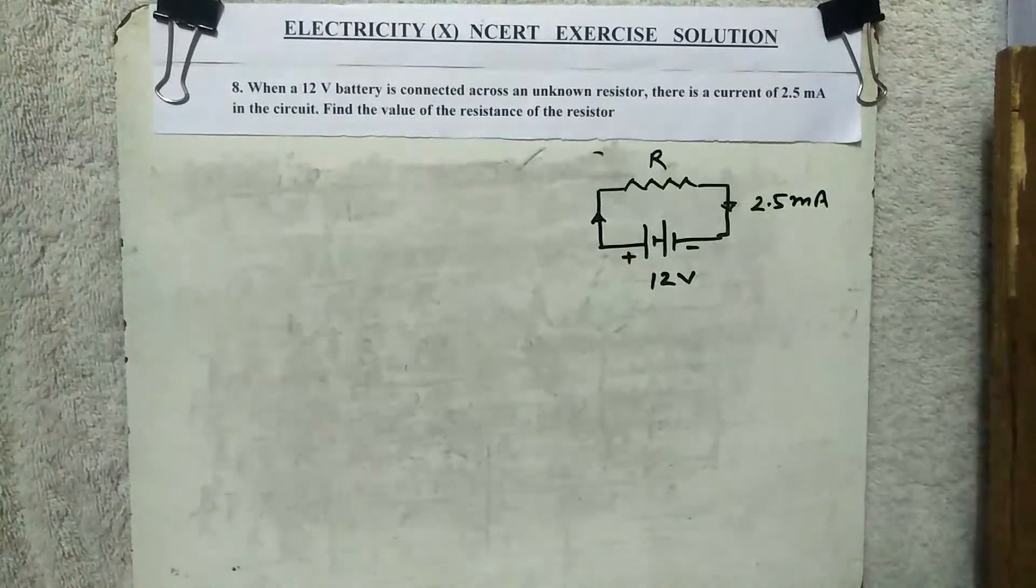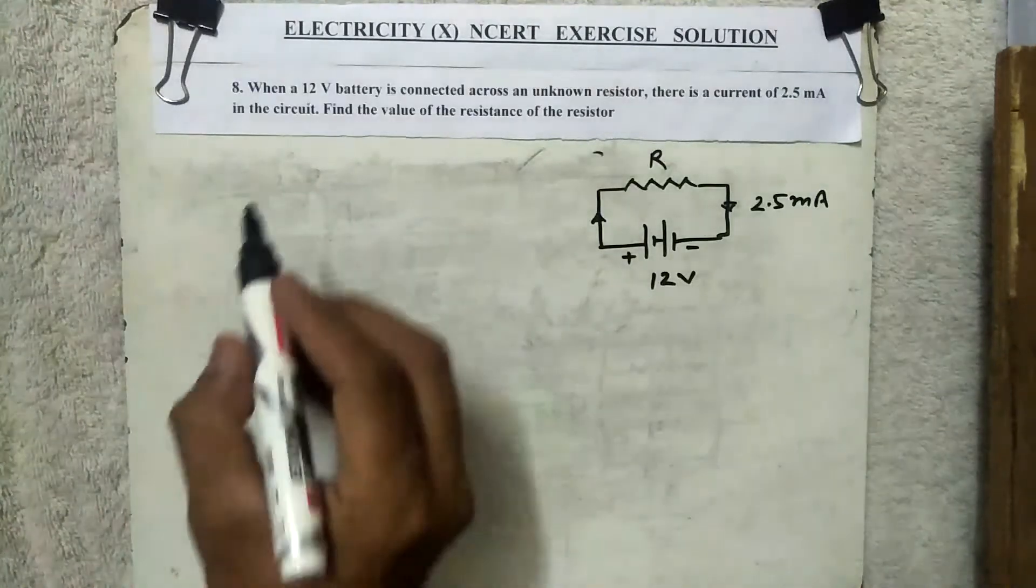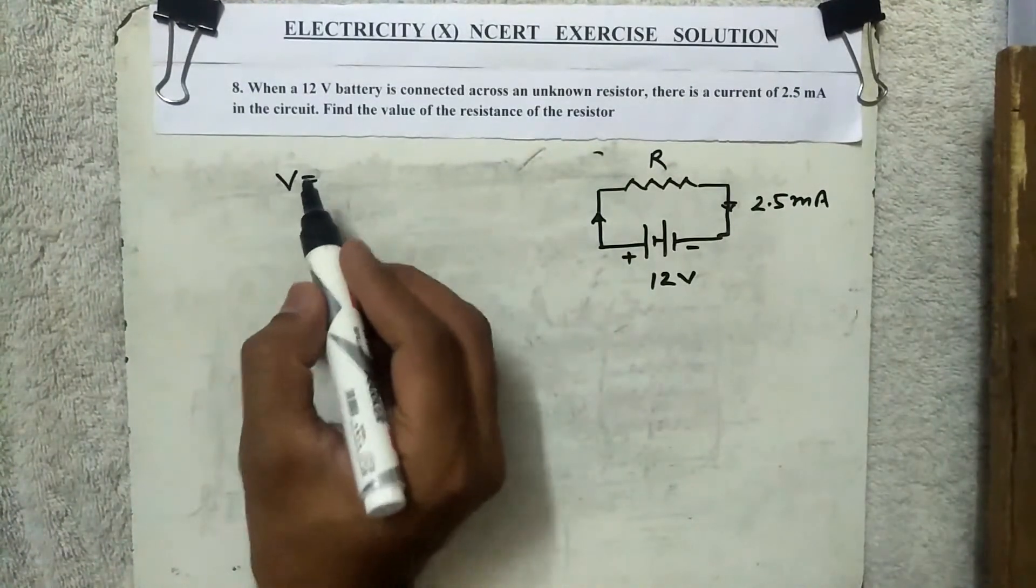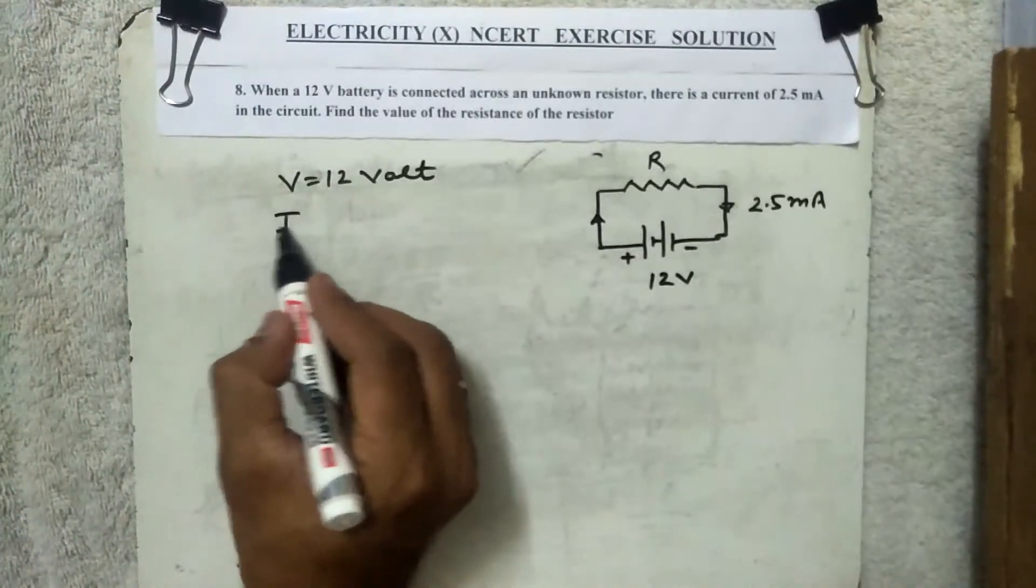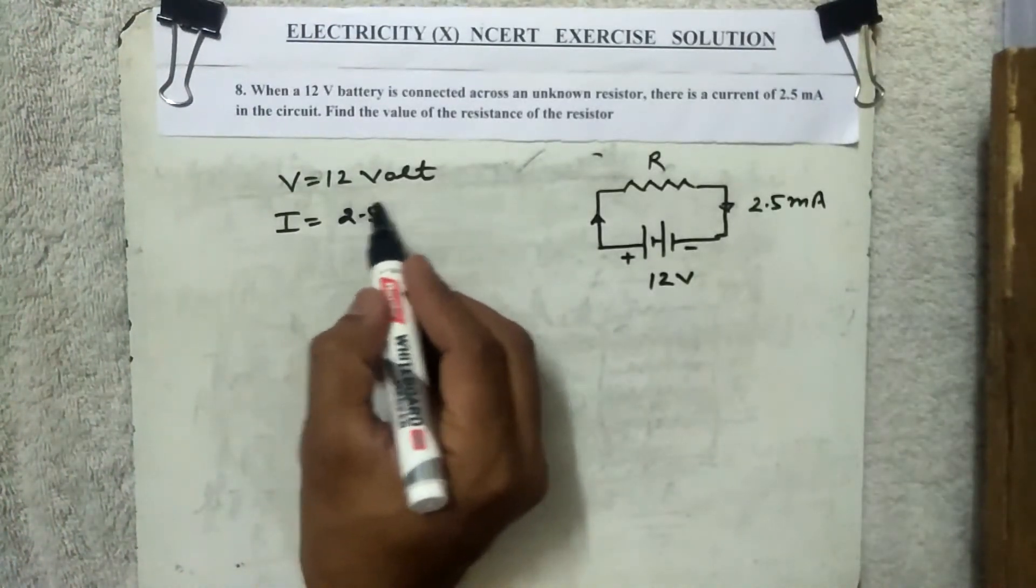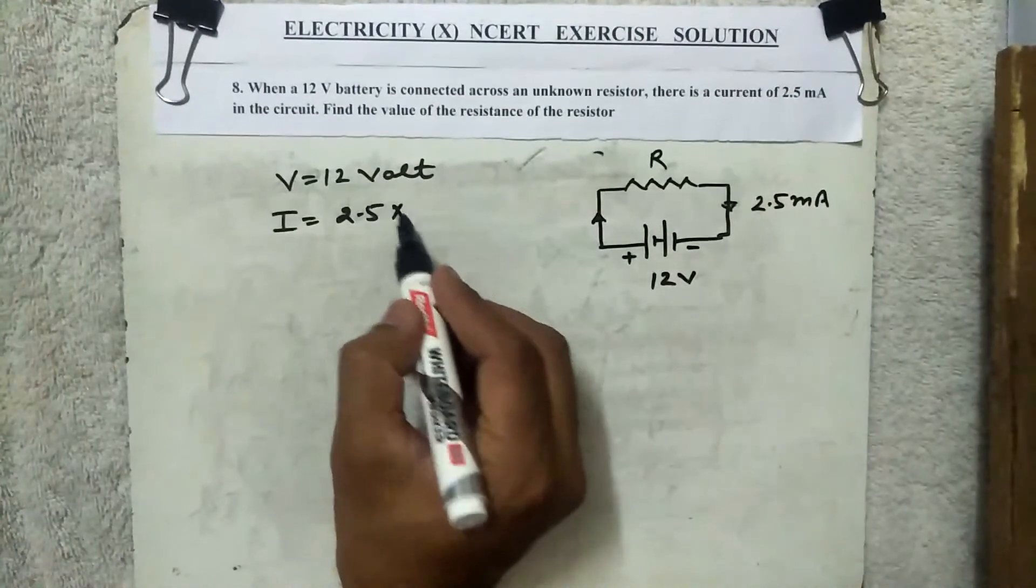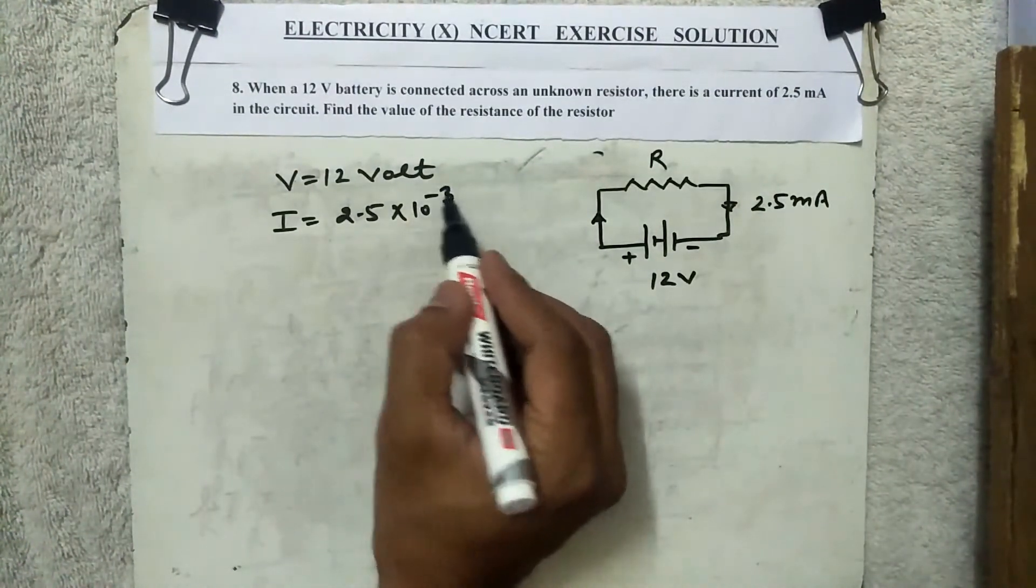Milliampere, okay, so we have to find. So what is given here? V is equal to 12 volt. I is how much? I is about 2.5 into 10 raised to power minus 3 ampere.